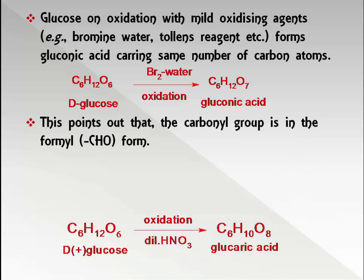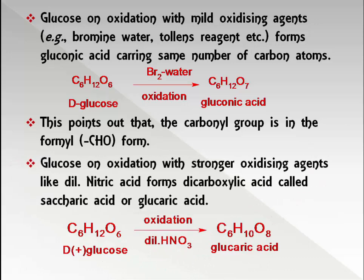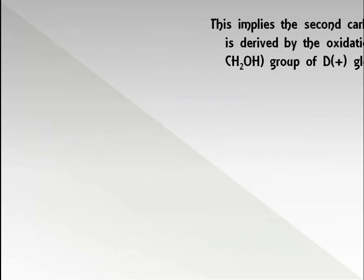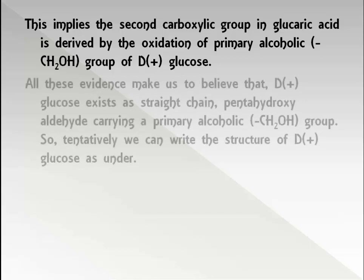Glucose on oxidation with a strong oxidizing agent like dilute nitric acid forms a dicarboxylic acid called saccharic acid or glucaric acid. This implies the second carboxylic group in glucaric acid is derived by oxidation of the primary alcoholic group of D-glucose.